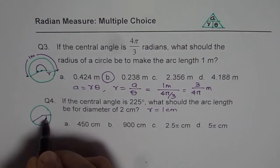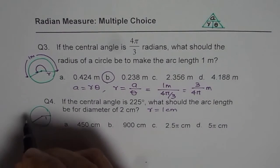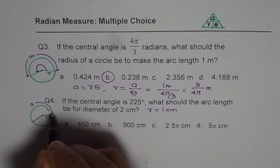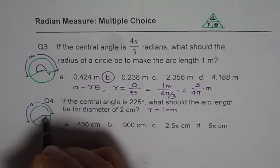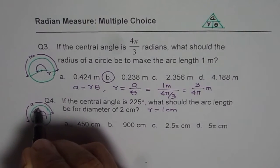What should the arc length be for diameter of 2 centimeters? So that means radius is 1 centimeter. Diameter 2, so let me write this as 1 centimeter. We need to find a this time, but we know the angle. Angle is 225 degrees.